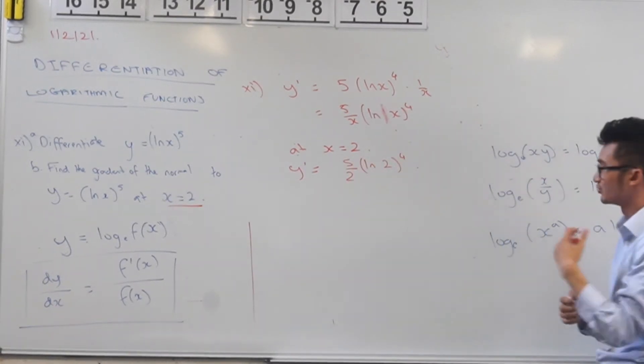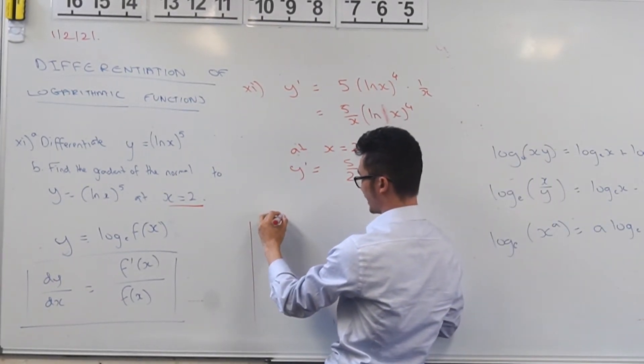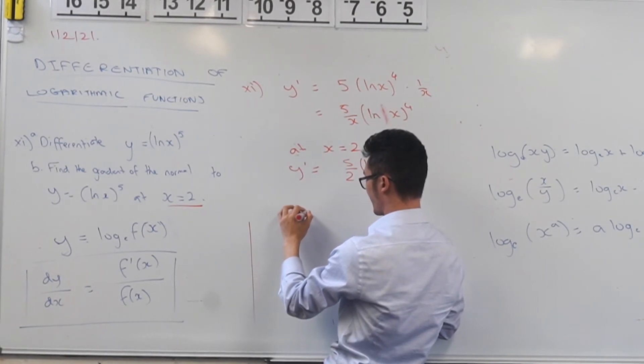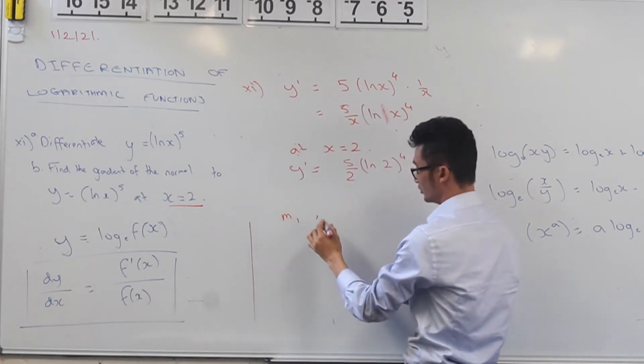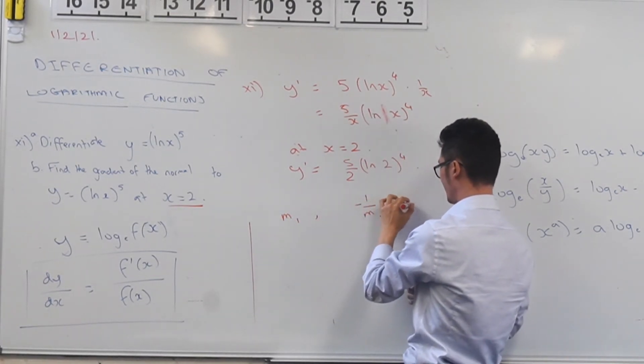But that's the gradient of the tangent, I want the gradient of the normal. And remember, for our normals we have this property here. So if m1 is your tangent then your normal is going to be negative 1 over m1, so that's the normal there.